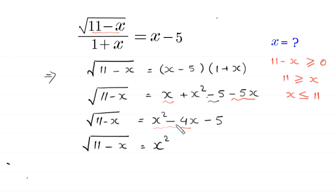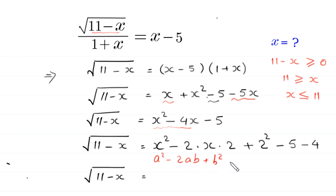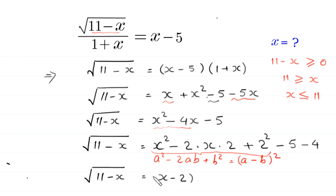We want to make x squared minus 4x a perfect square, so we write negative 4x as negative 2 times x times 2. To complete the square we add 2 squared, and to balance we subtract 4. Using the identity a squared minus 2ab plus b squared equals (a minus b) whole squared, this gives x squared minus 2 times x times 2 plus 2 squared equals (x minus 2) squared. So the right-hand side becomes (x minus 2) squared minus 9.